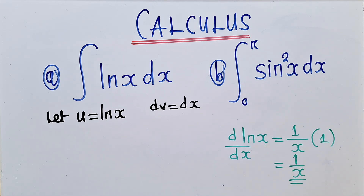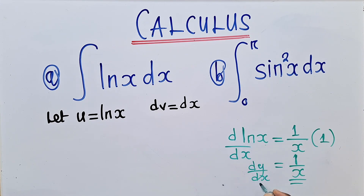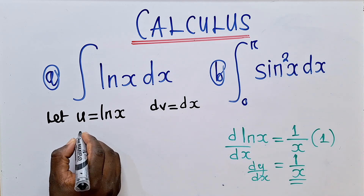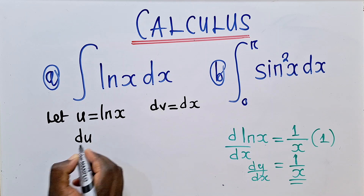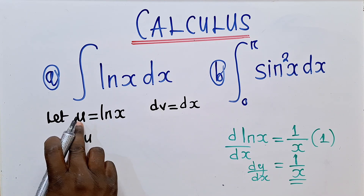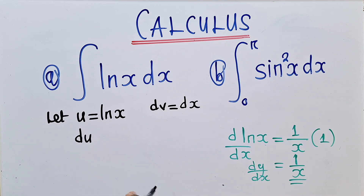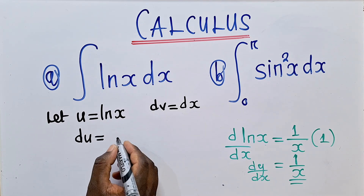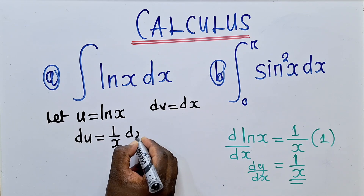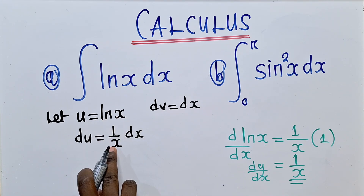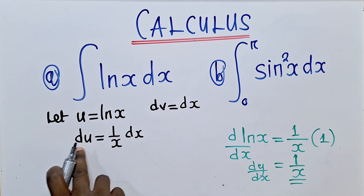So this is what we are going to get. Once we get the derivative, we write it as du, because this function is with respect to x and it's a u equation. So we're going to say du is equal to 1 over x, and then we bring dx. Just write the derivative here and then say dx. This side you say du, because this is u.